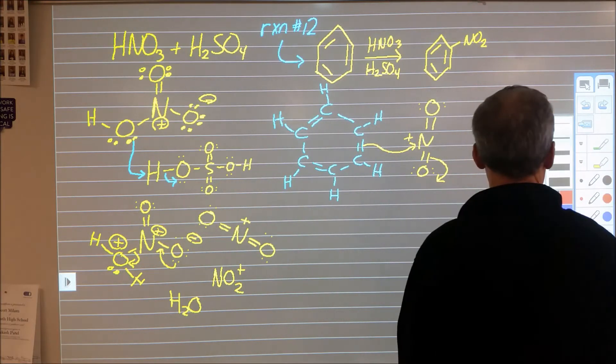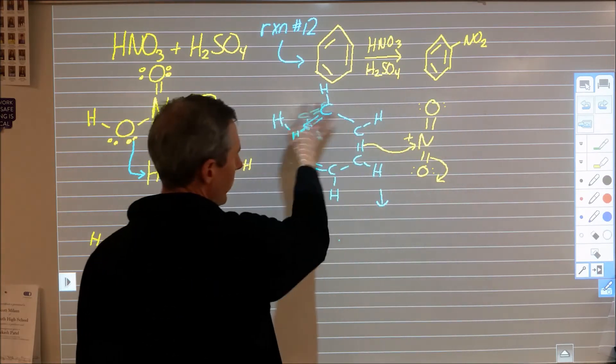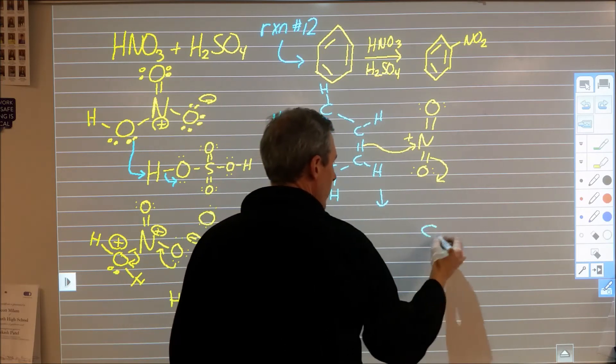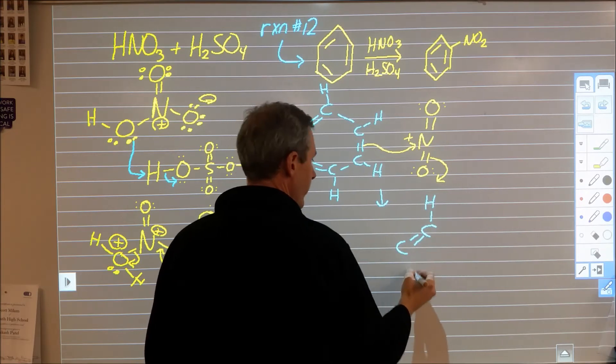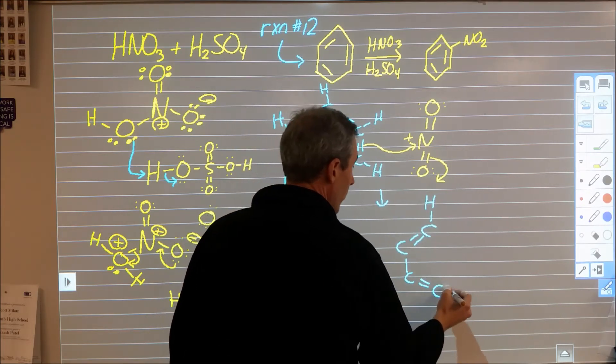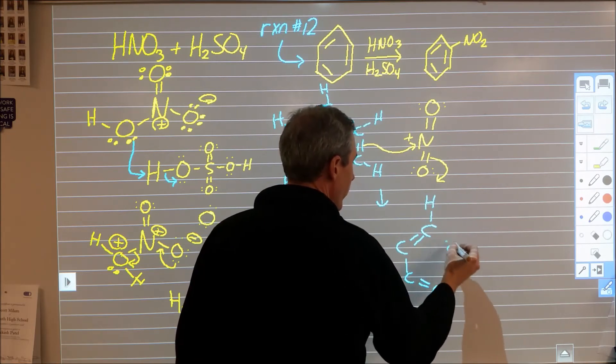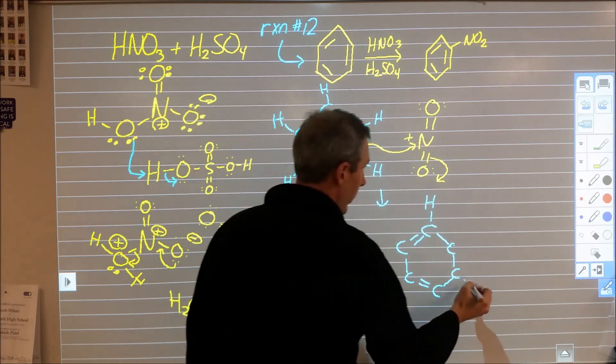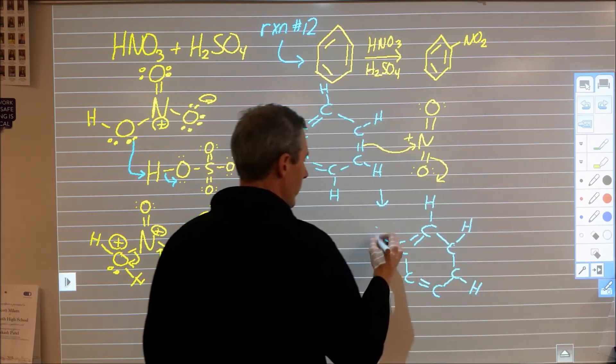So we end up with the following structure. We end up with this missing this double bond. We have carbon to a hydrogen, double bond, carbon, single bond, carbon, carbon, and then over here we've now used that double bond so we're only left with a single bond on all three of those continuous bonds.